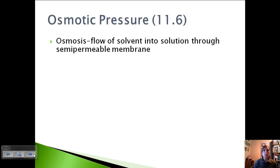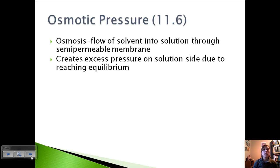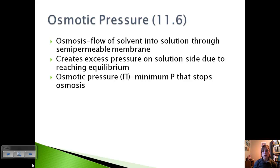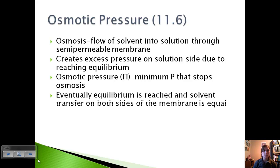The third colligative property is osmotic pressure. Osmosis is the flow of solvent into solution through a semipermeable membrane. It only lets certain things through; that's why it's semipermeable. This creates excess pressure on the solution side because we have all of this solvent going in, trying to reach equilibrium. Osmotic pressure is the minimum pressure that stops osmosis. It's the pressure pushing back down that prevents it from going up anymore. We use pi to indicate osmotic pressure. Eventually equilibrium is reached and solvent transfer on both sides of the membrane becomes equal.